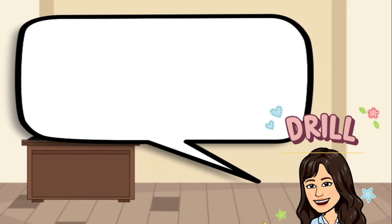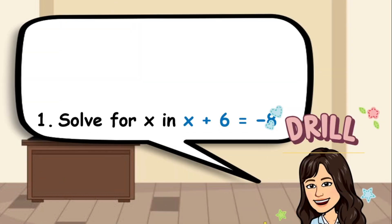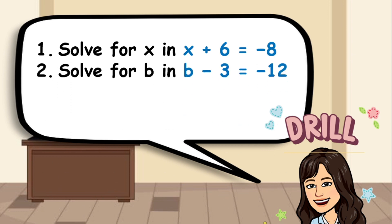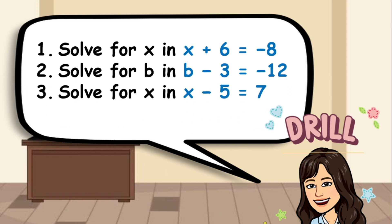For your first drill, solve for the value of the unknown variable to make the equation true. Number 1: solve for x in x plus 6 equals negative 8. Number 2: solve for b in b minus 3 equals negative 12. And number 3: solve for x in x minus 5 equals 7.